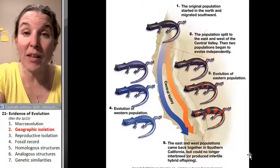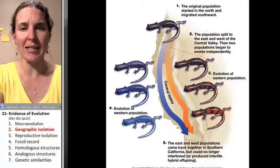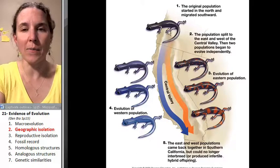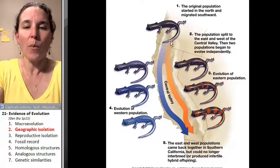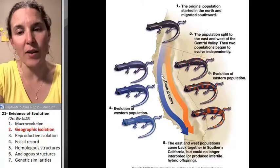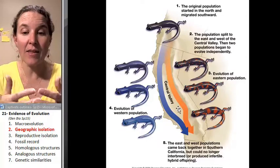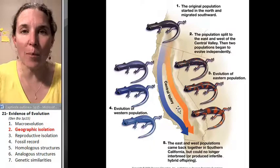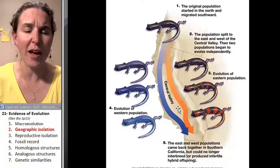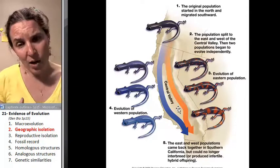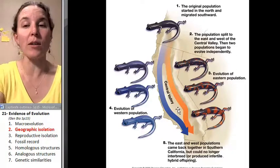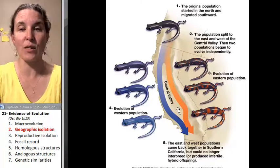Here's a true example: a salamander species that originally started in what looks like Oregon, and this population migrated south. As they migrated south, they were separated by the Central Valley. The Central Valley is an example of a geographic barrier that separates them — too hot, too dry, too wide. Salamanders just couldn't cross it, so those two separating populations weren't mixing.